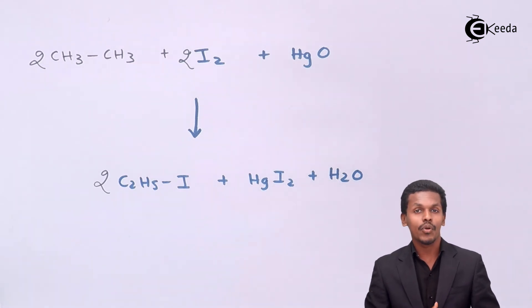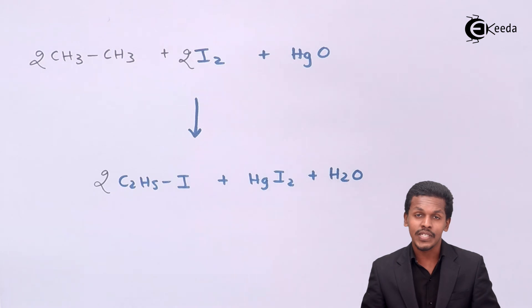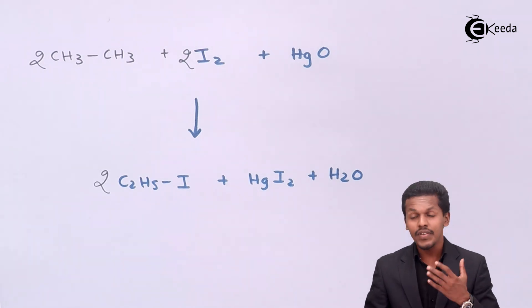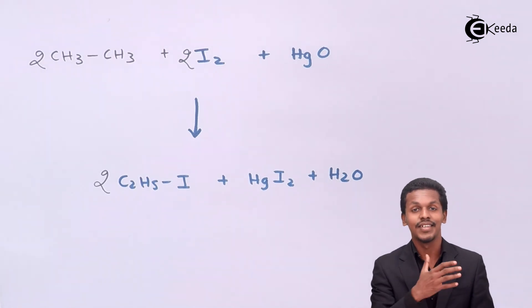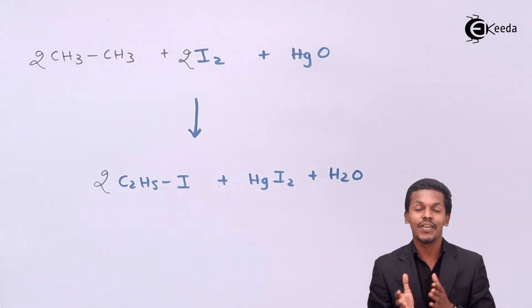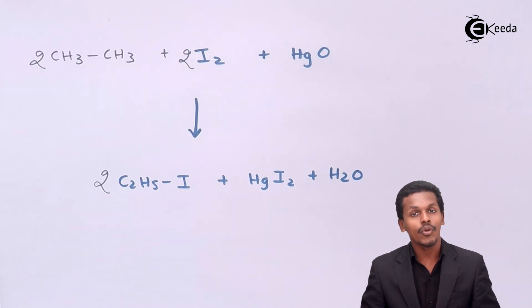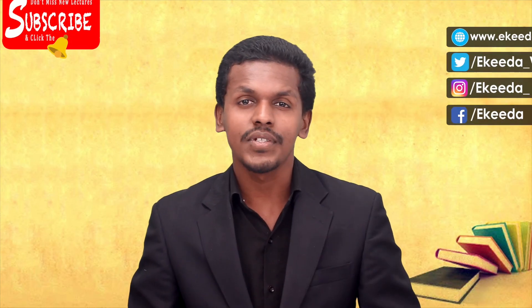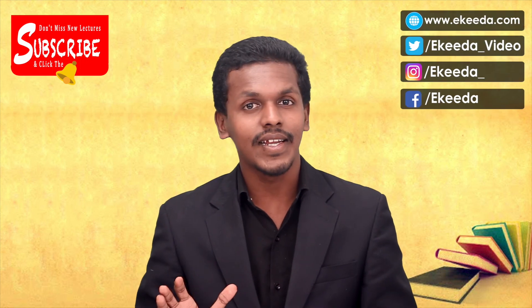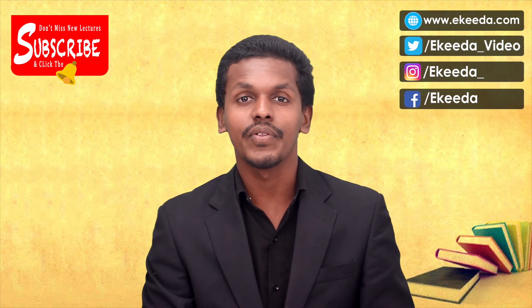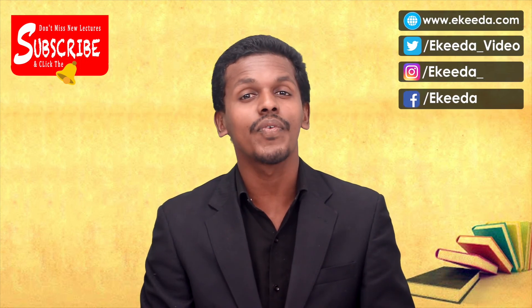This is the halogenation process — the first preparation method for alkyl halides that we have discussed. Thank you friends for watching this video. I hope you have understood this clearly. Please share this video with your friends, don't forget to subscribe and hit the bell icon. Thank you so much.